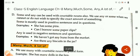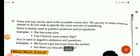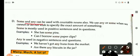Some and any can be used with countable nouns. We use any or some when we cannot or do not wish to specify the exact amount of something. When the exact amount of anything is not known to us, then we use some or any. For example, she has some pins but we don't know exactly how many pins.